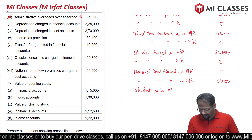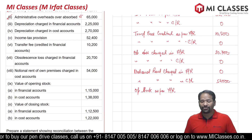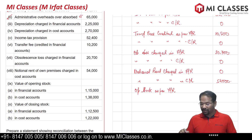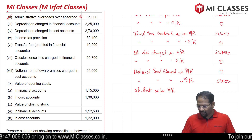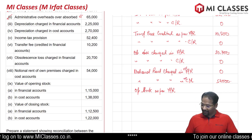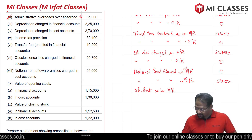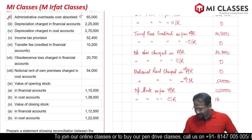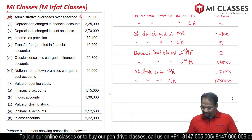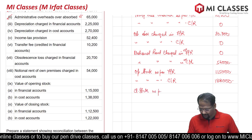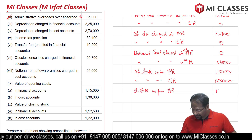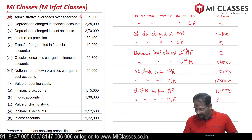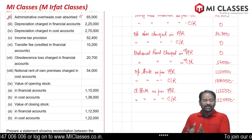Opening stock as per financial records is 1,15,000; as per cost records it is 1,38,000. Closing stock as per financial records — and the last entry — as per cost records is 1,22,000. We have now copied all the data from the question into our statement. Financial records always come first because we started from financial accounting profit.